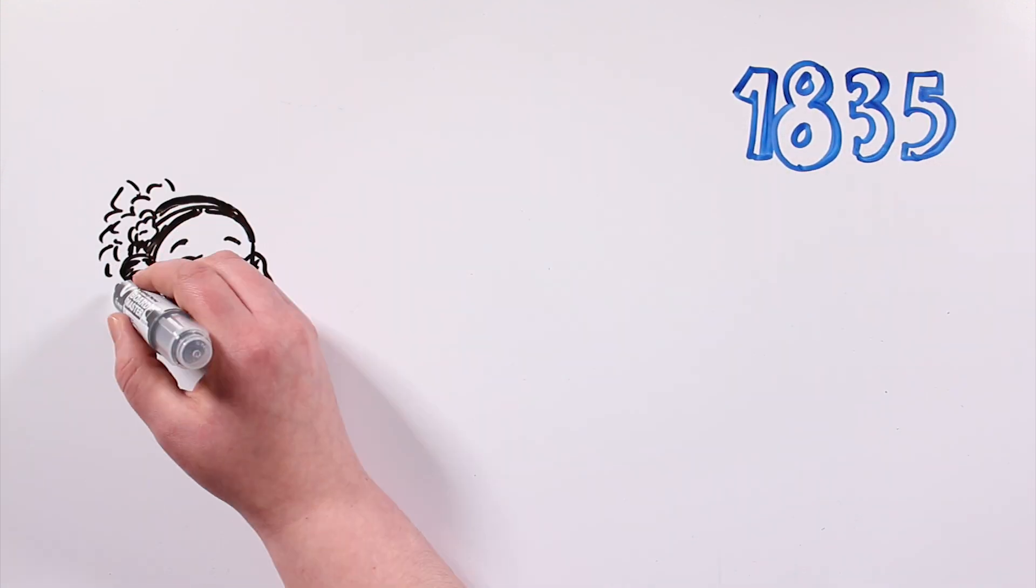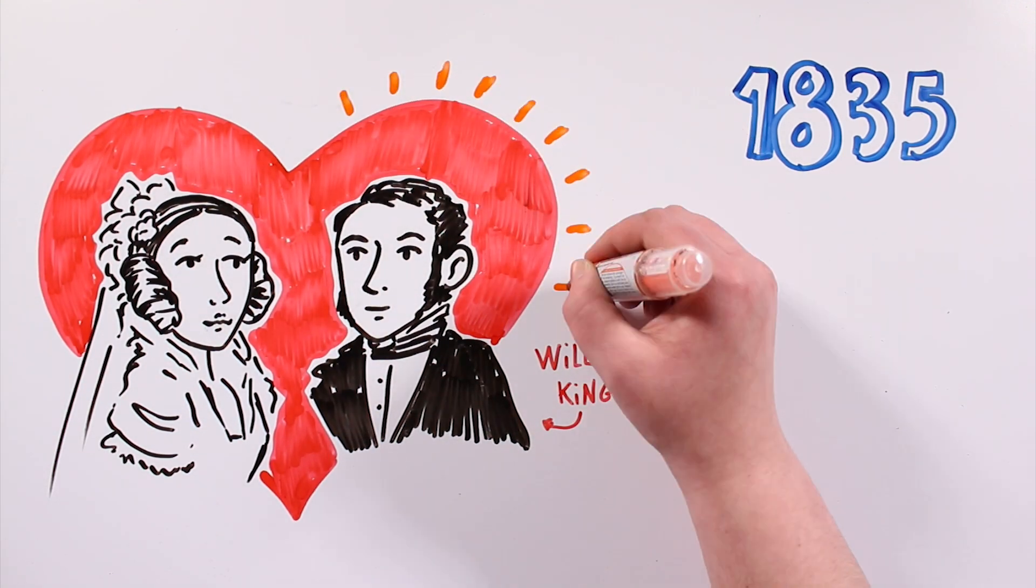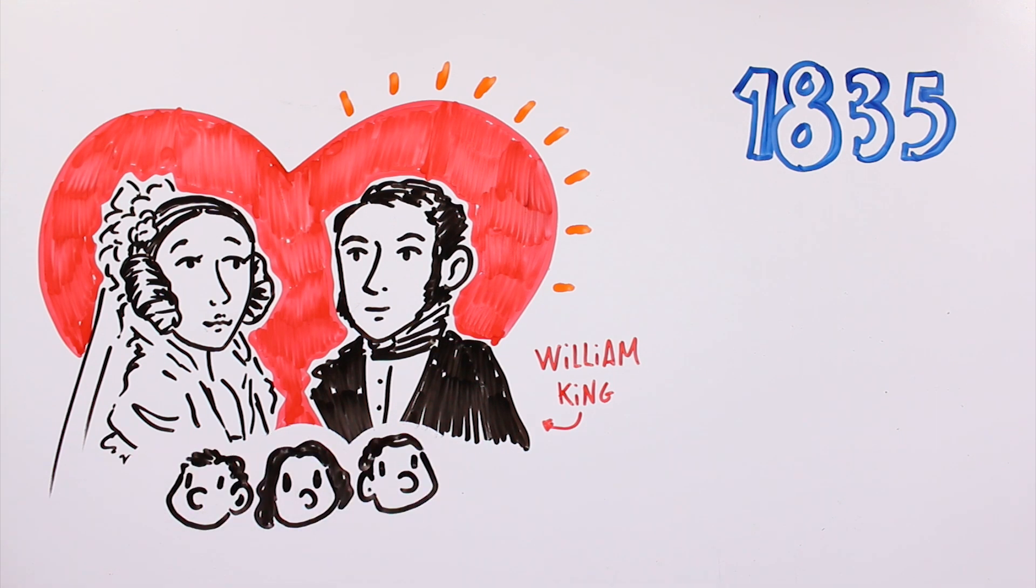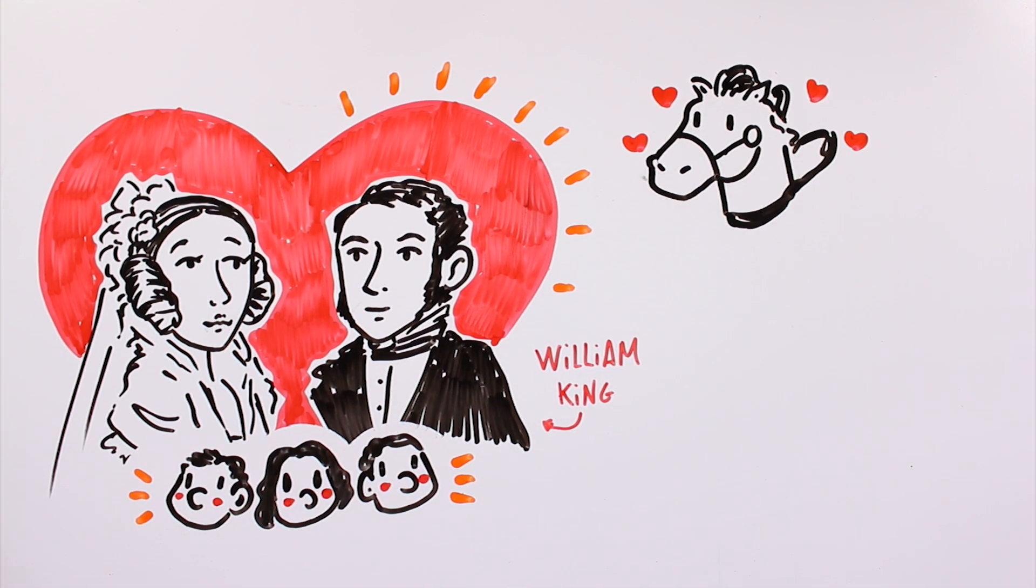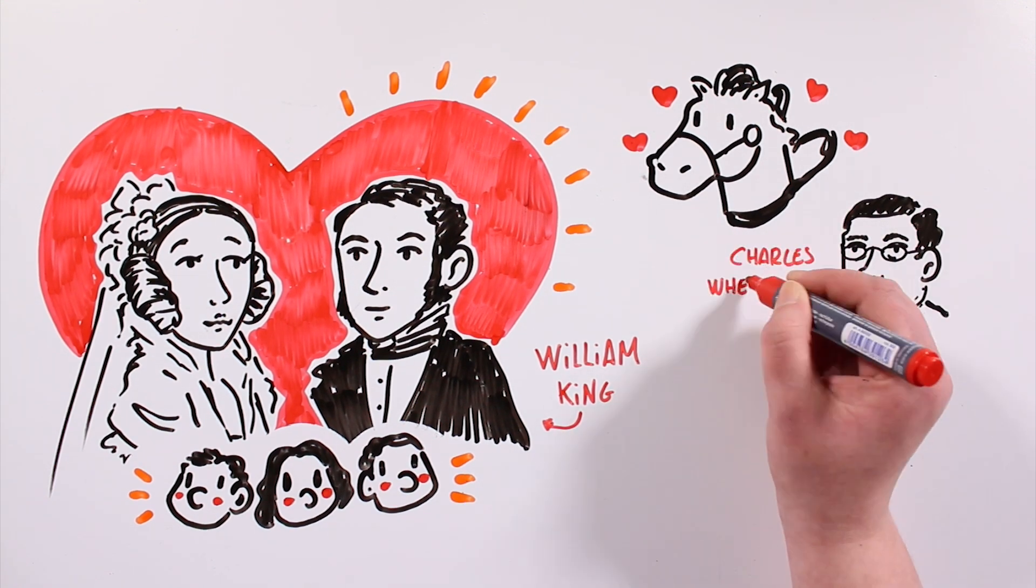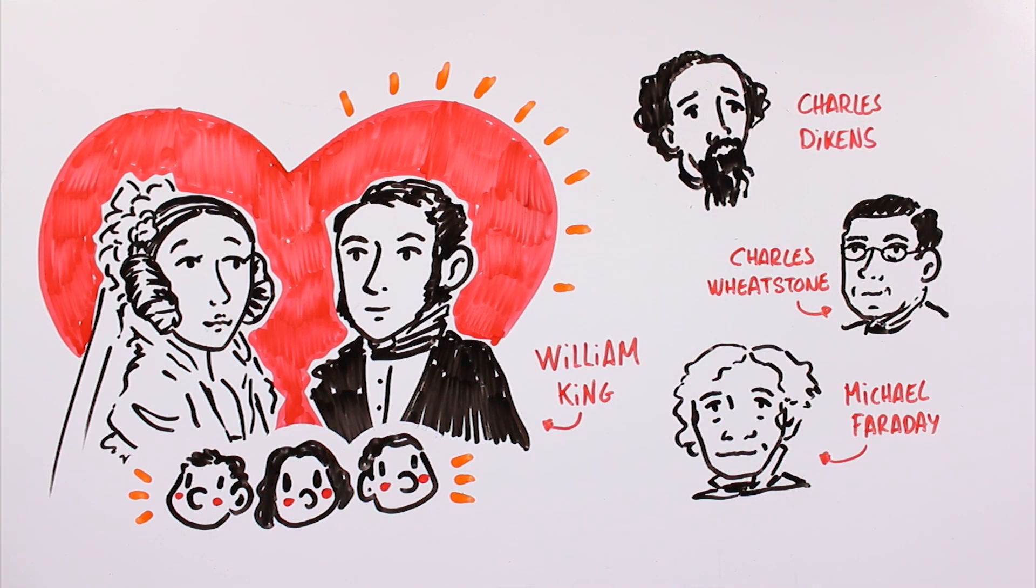Ada married in 1835 to William King, who became the Count of Lovelace three years later. They had three children together. Ada and her husband shared their love for horses, and socialized with many of the illustrious minds of the time, such as Charles Whitstone, Michael Faraday and Charles Dickens.